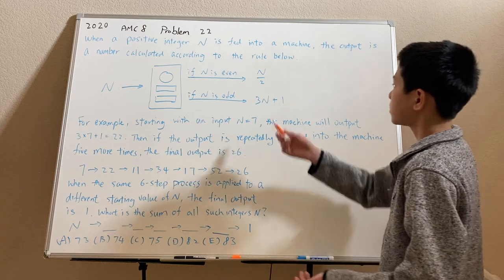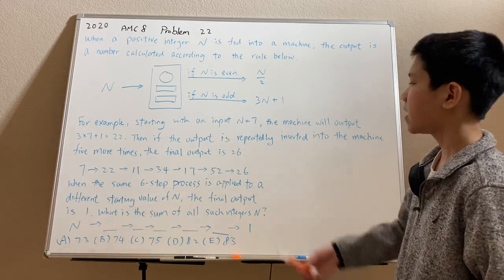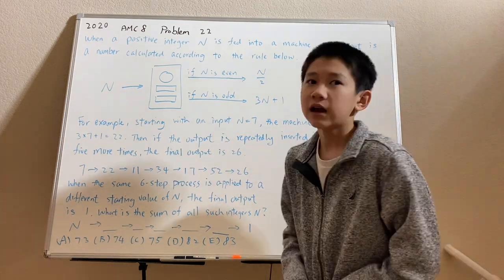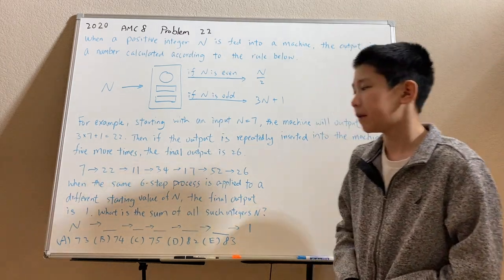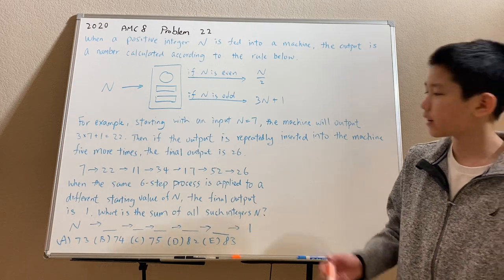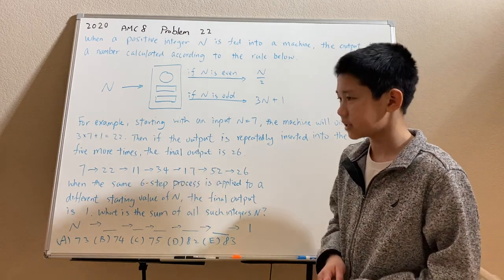11 is inputted, 11 is odd, so 3 times 11 plus 1 is 34, etc. And you get to 26. Now when the same six step process is applied to a different starting value of n, the final output is 1. And you want to find the sum of all possible values of these integers n.